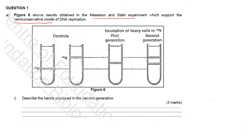The two scientists did an experiment to prove that DNA replication occurs according to the semi-conservative model by growing bacteria, which is E. coli, in a medium that contains nitrogen isotopes. There are two nitrogen isotopes: nitrogen-15 and nitrogen-14. Nitrogen-15 is the heavier isotope.